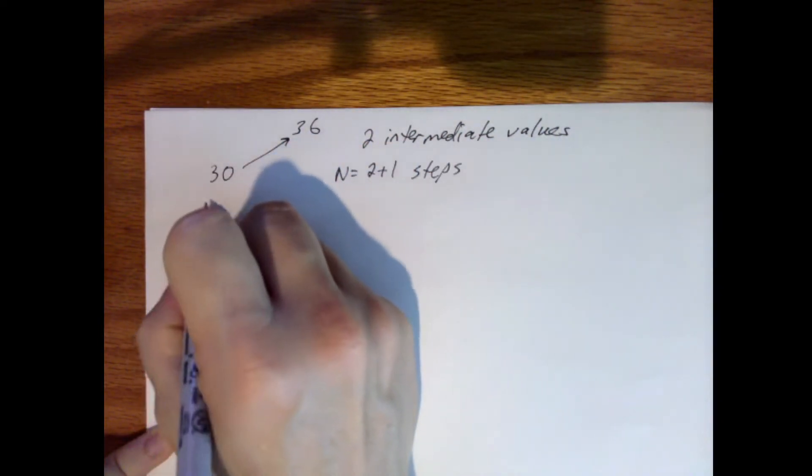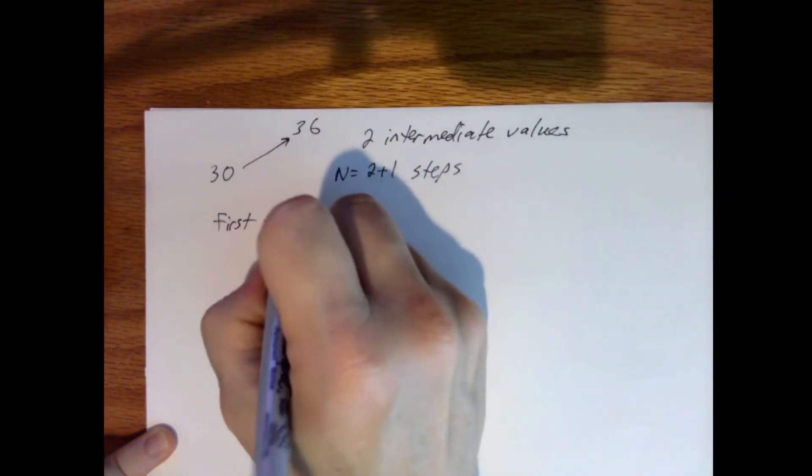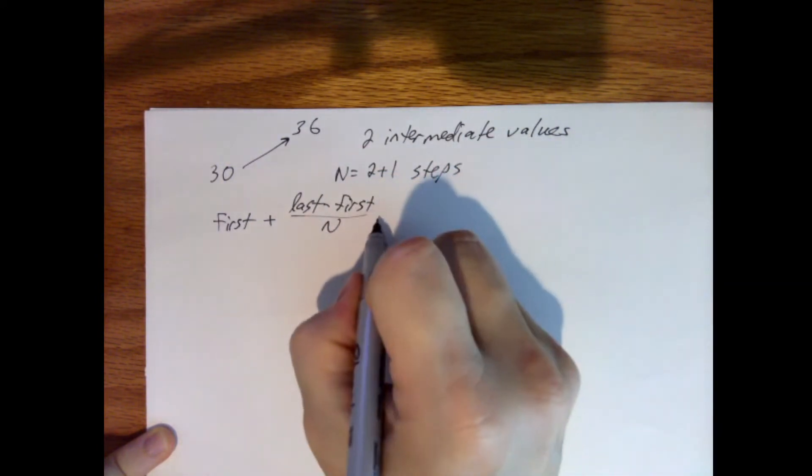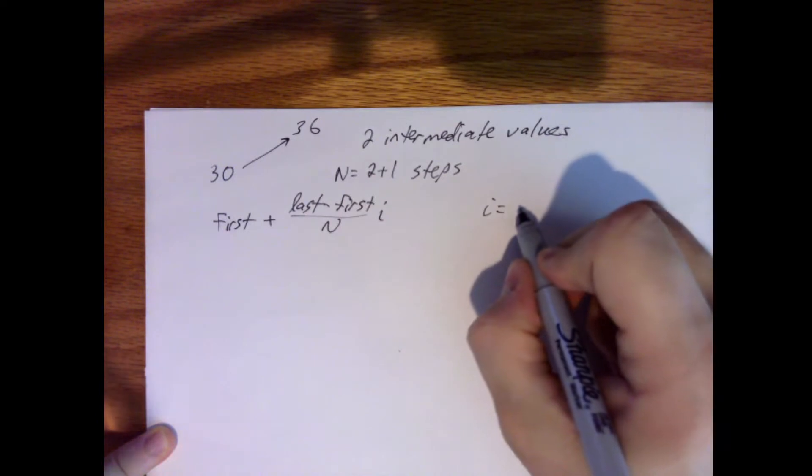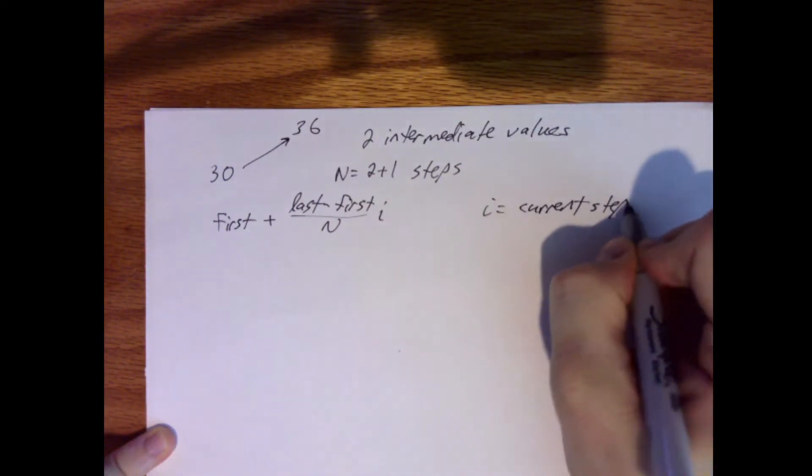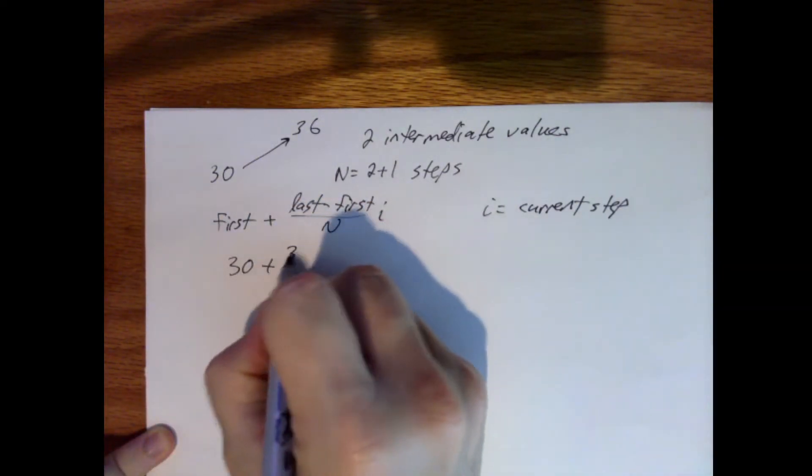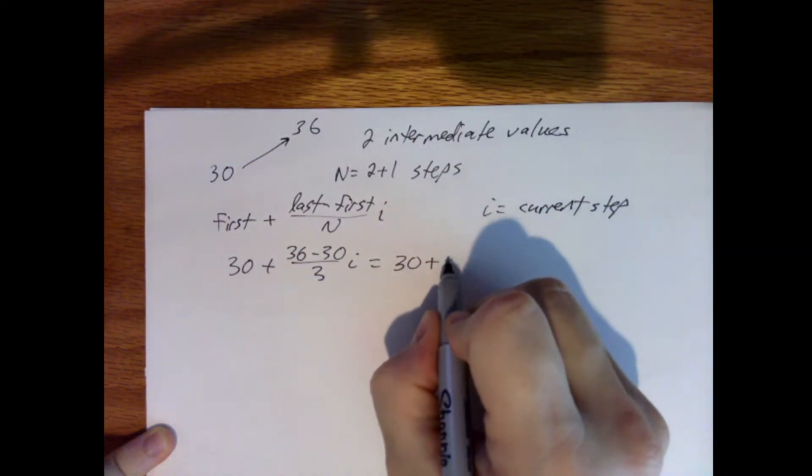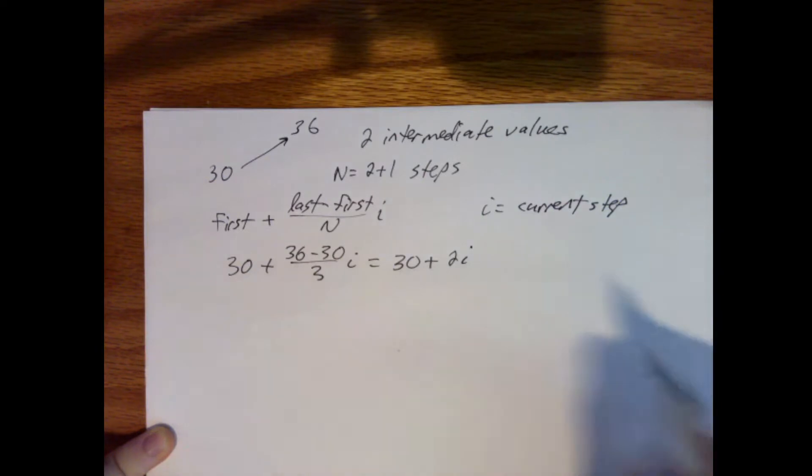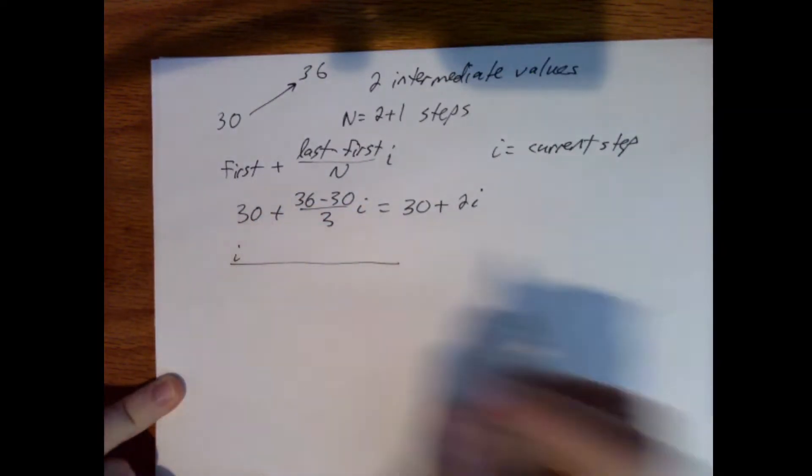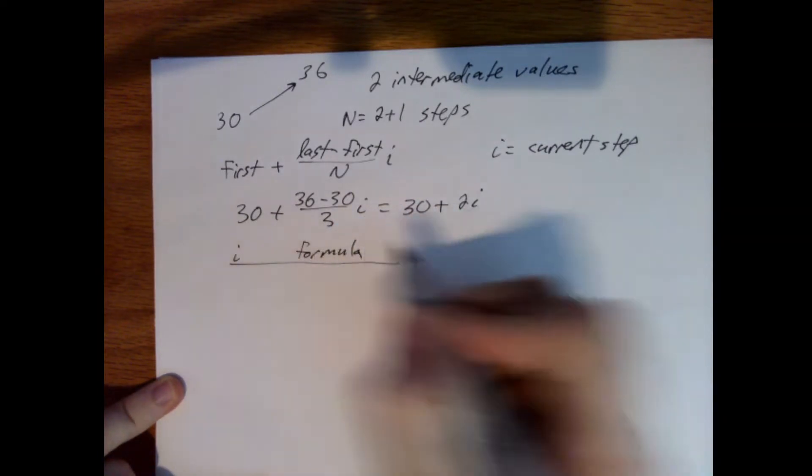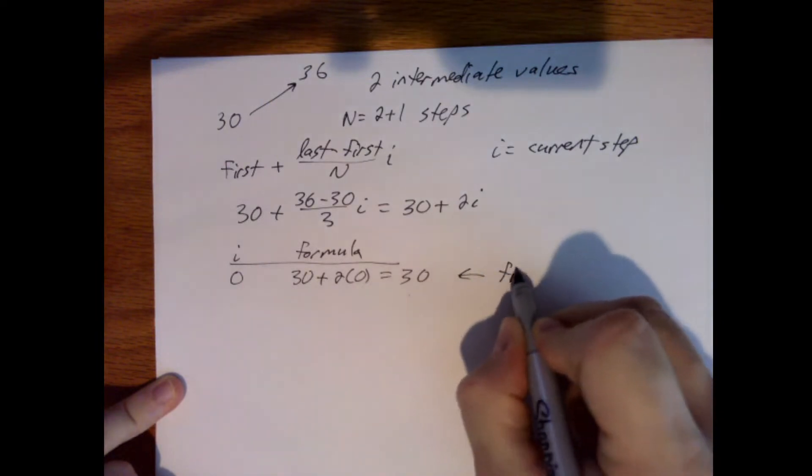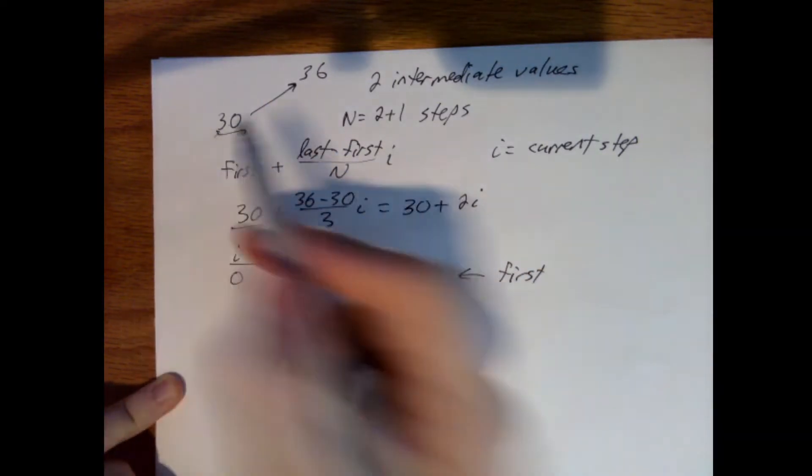But the formula I'm gonna use is this: the first value plus the difference in the two values, so it's gonna be last minus first, divided by n, and then I'm gonna have a step counter where i equals current step. So using this example we would have 30 plus 36 minus 30 over 3i, which is 30 plus 6/3 or 2i. Right? So 6 divided by 3 would be 2. So when i is 0, I have 30 plus 2 times 0 equals 30. That's my first value, which we don't actually need to produce.